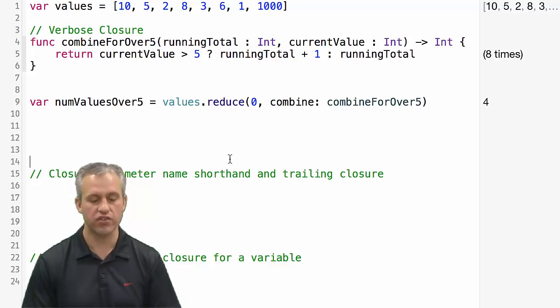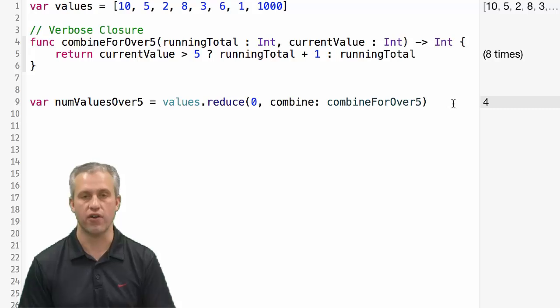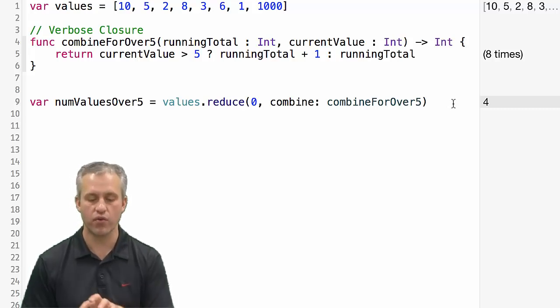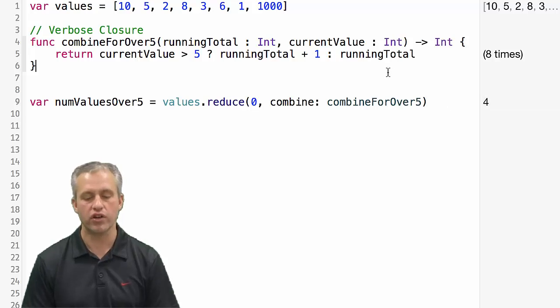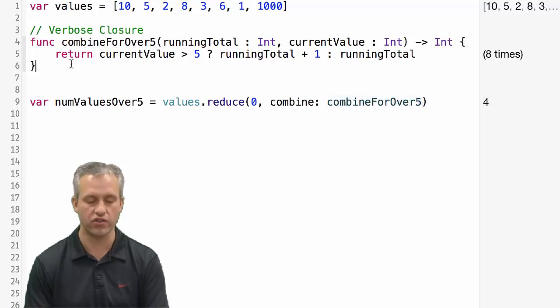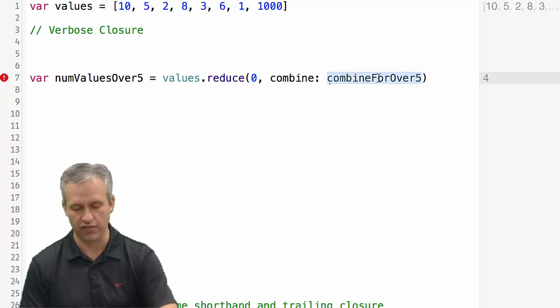So the way we've done it here is this is a closure, because technically a closure is just passing in a function to another function. But it's not really what people expect when you say I'm using Swift closures. Usually a closure is anonymous. So like this name combine for five, it won't exist. And what you'll actually do is you'll actually pass in that function instead of actually giving it a name.